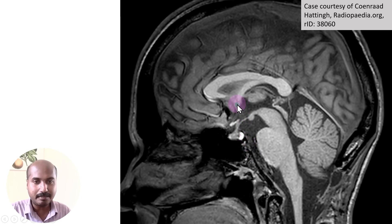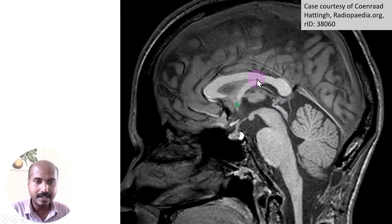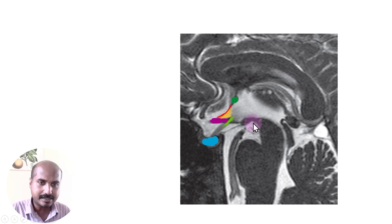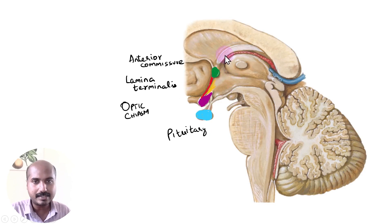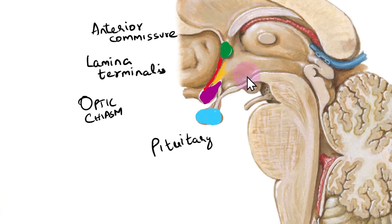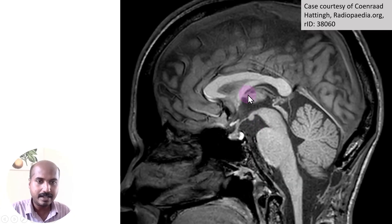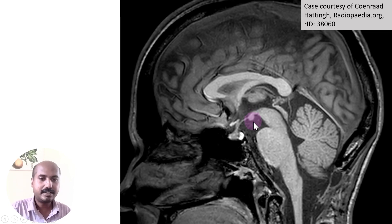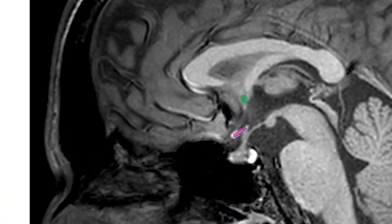Next we move to a T1-weighted MRI image and perform the same exercise. You can identify the anterior commissure near the rostrum of the corpus callosum, as well as the fornix. The fornix divides near the anterior commissure into a small pre-commissural fornix and the larger post-commissural fornix. The post-commissural fornix is directed towards the mammillary body, which you can see here — you can observe the continuity and its orientation towards the mammillary body.